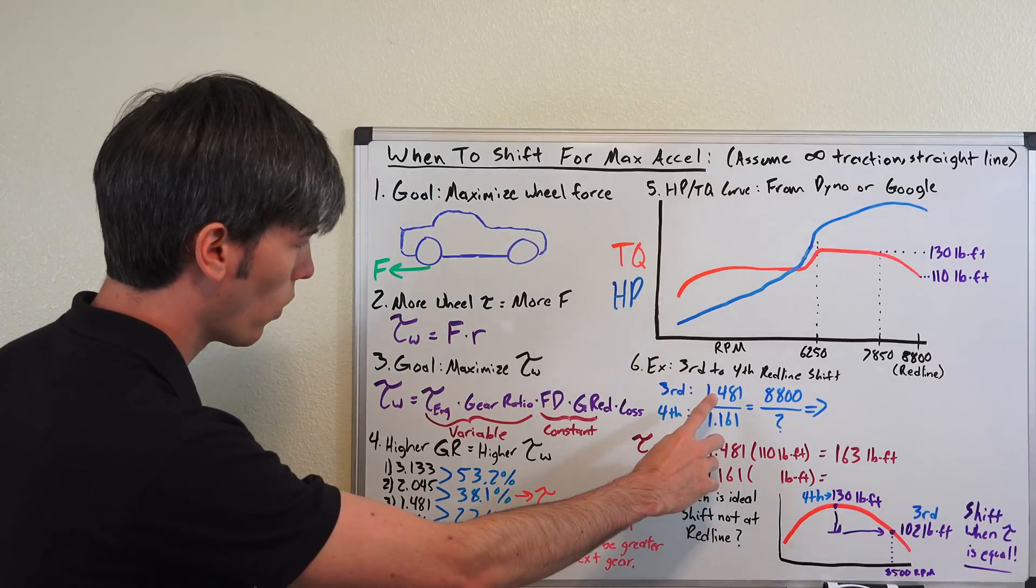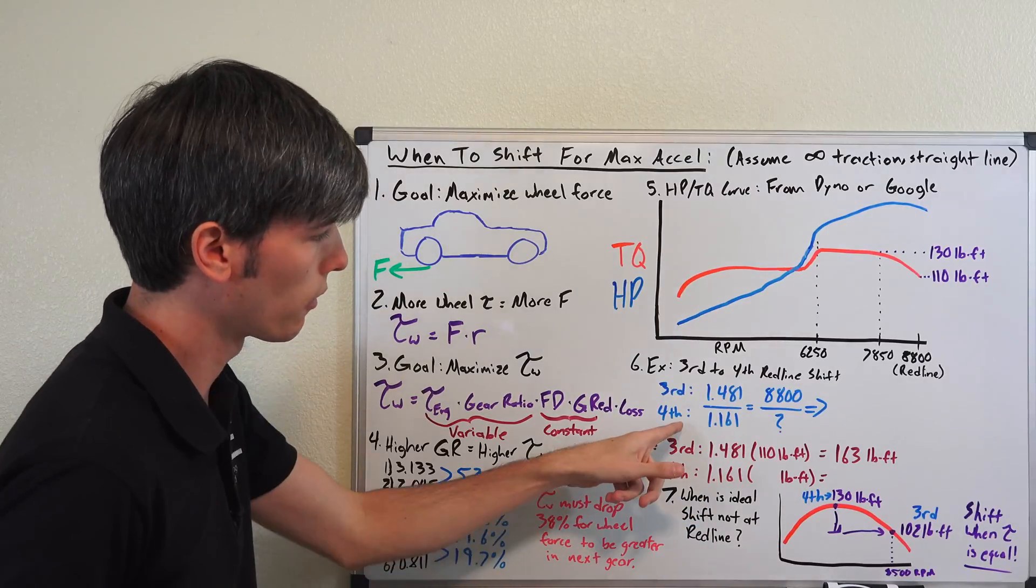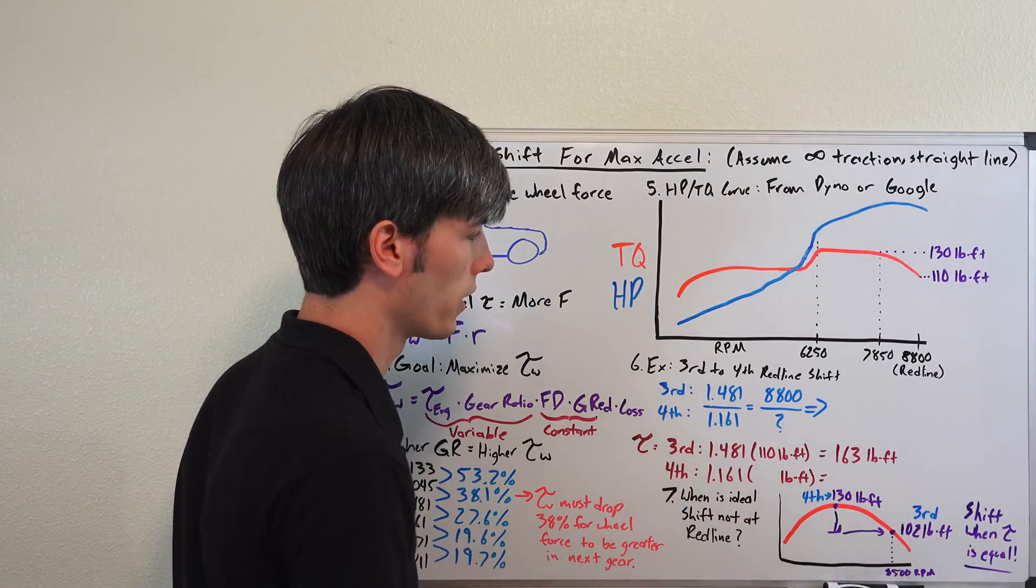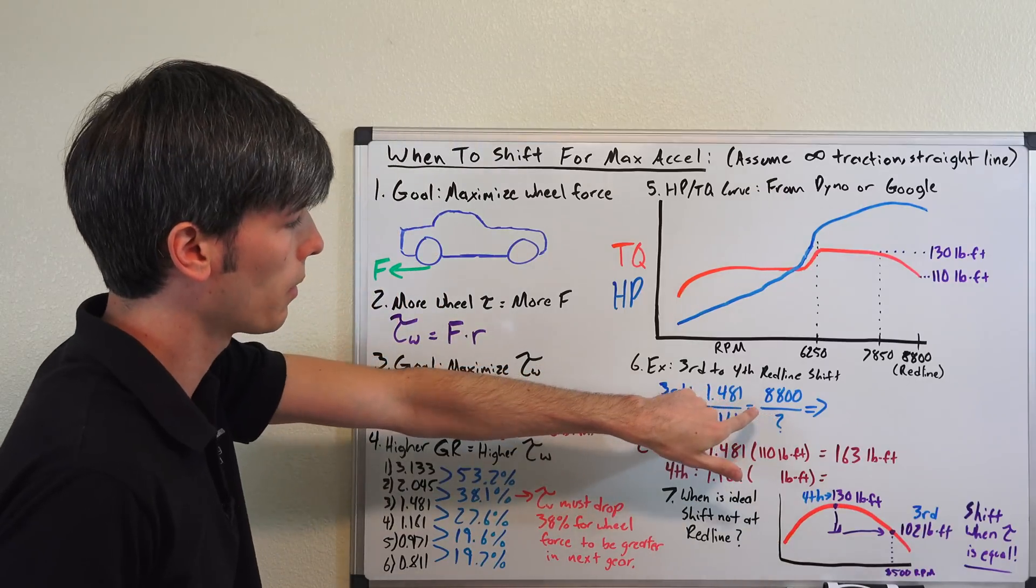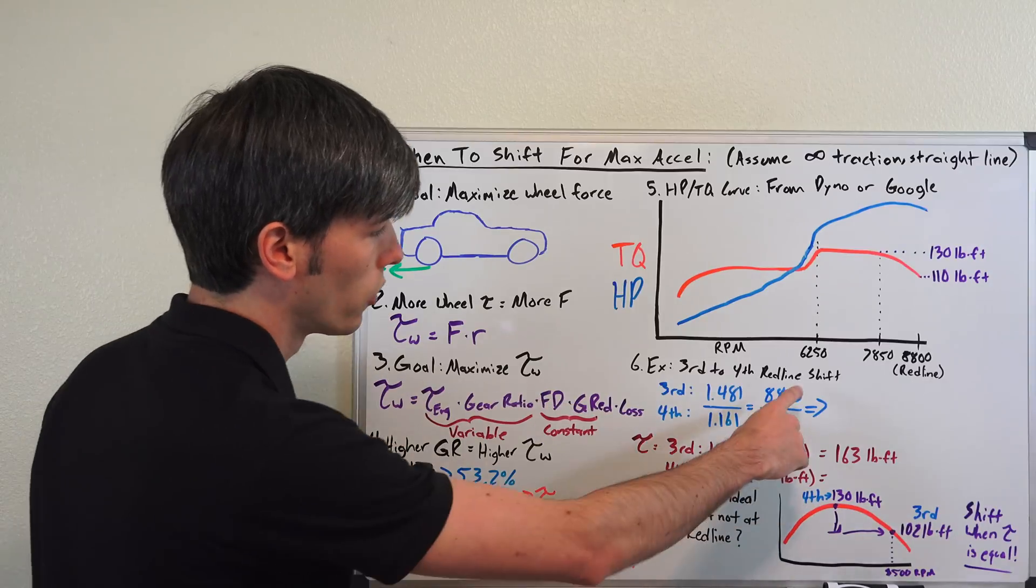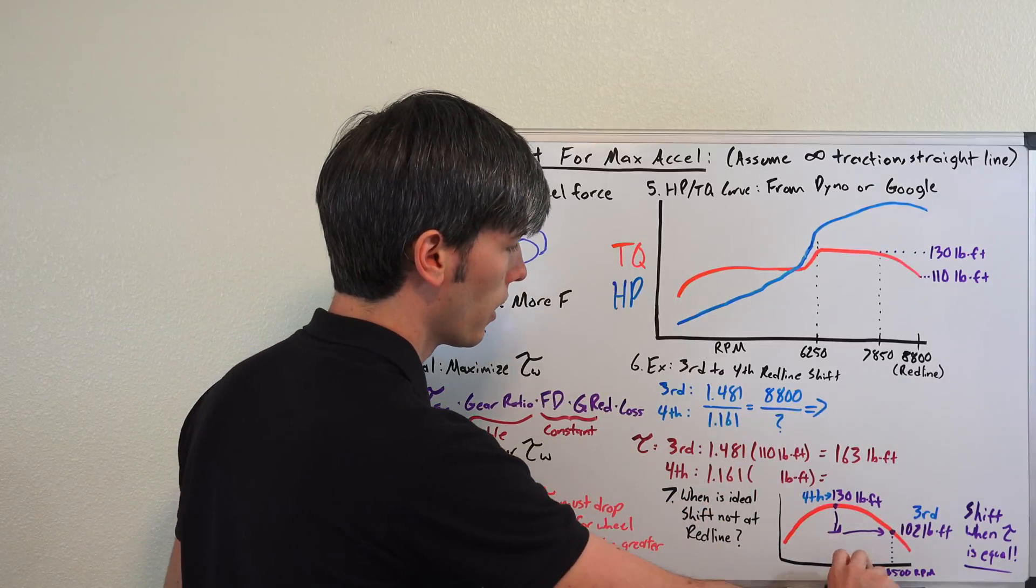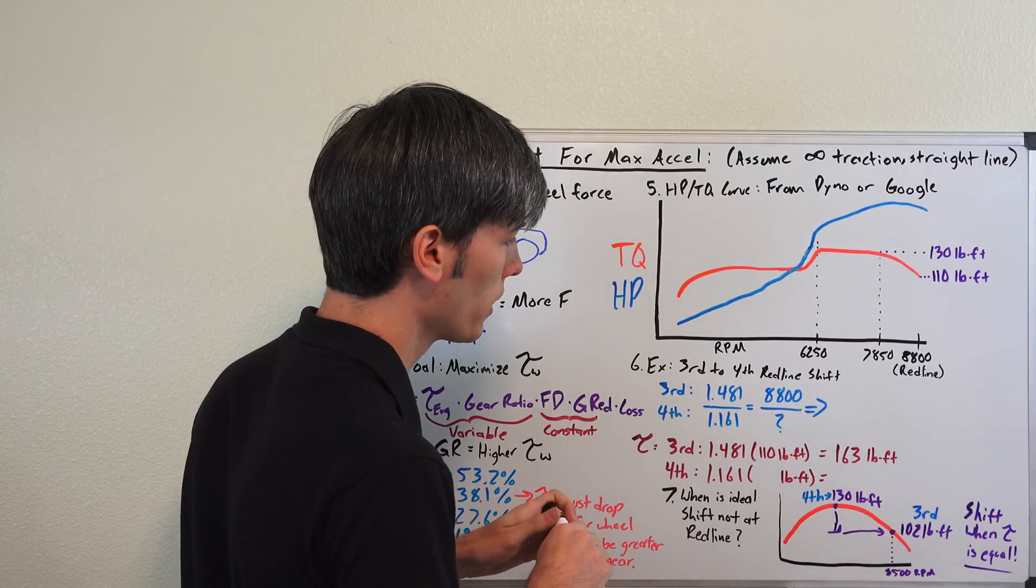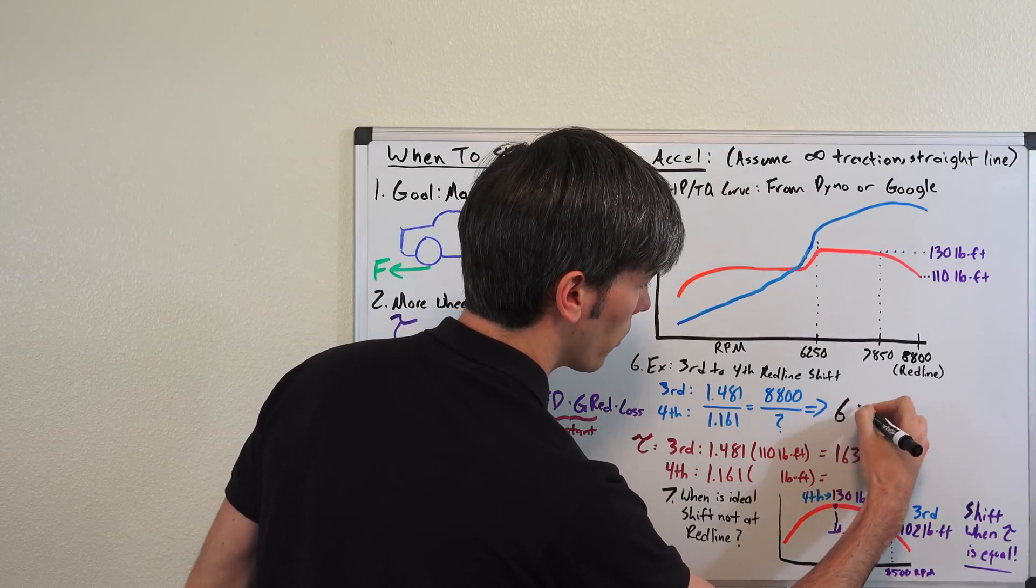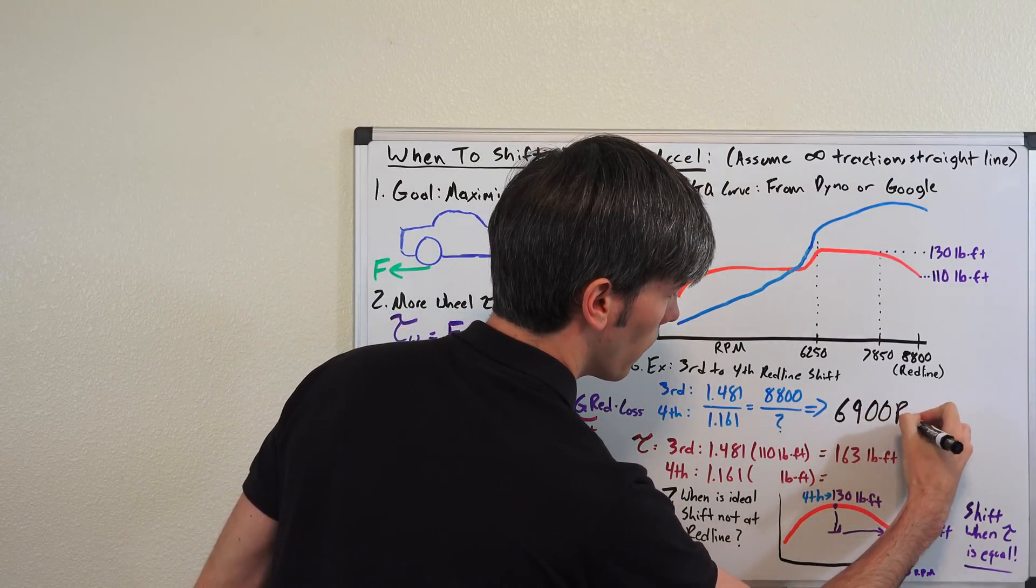So in third gear, we have a gear ratio of 1.481. In fourth gear, when we shift, we have a gear ratio of 1.161. So we're at 8800 RPM in third, we want to figure out what RPM that will be in fourth. So we just do this simple ratio, multiply 8800 by 1.161, divide that by 1.481, and that gives us about 6900 RPM.